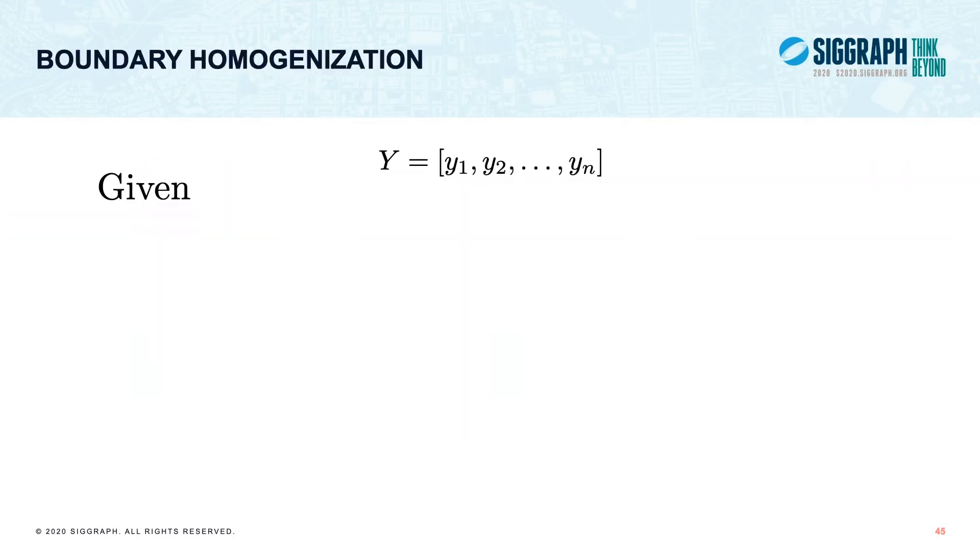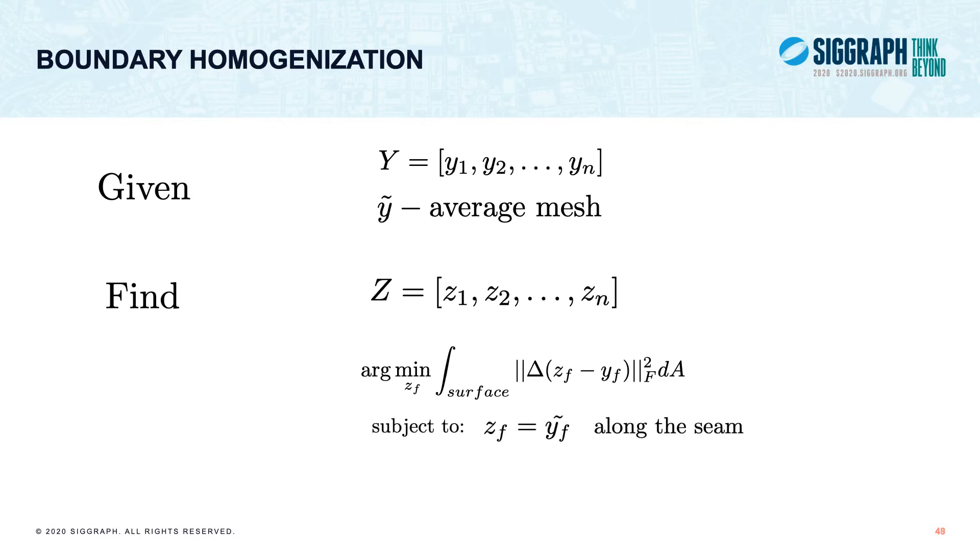We now deform all frames of the segmented mesh sequence so that the geometry of the part boundaries stay constant across all frames. In other words, the position of the boundary vertices cannot change, it's fixed. We take the segmented meshes and the average mesh across all frames and we want to find new deformed meshes where the part boundaries of each frame are set to be the same as the part boundaries of the average mesh. In the continuous setting, we model this as a minimization of the squared Laplacian energy of the displacement field.